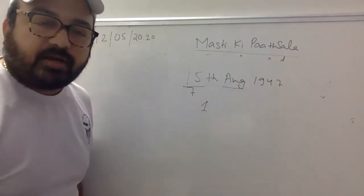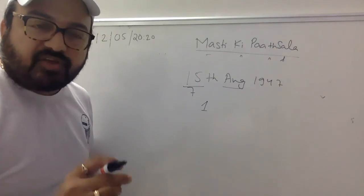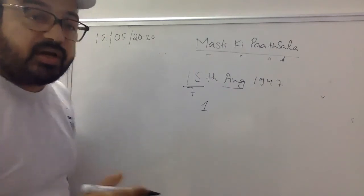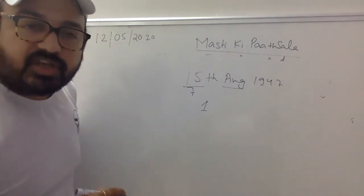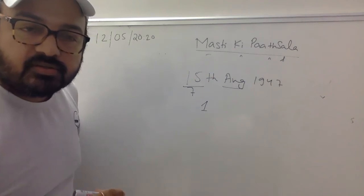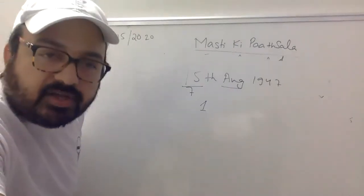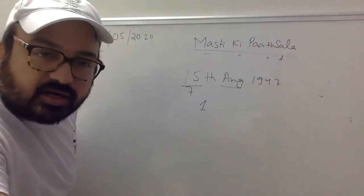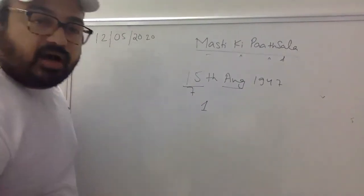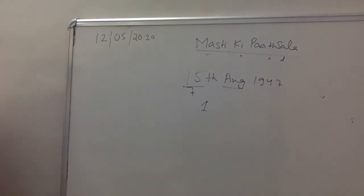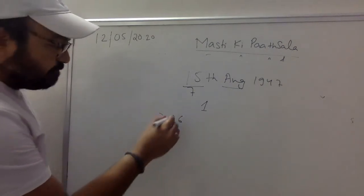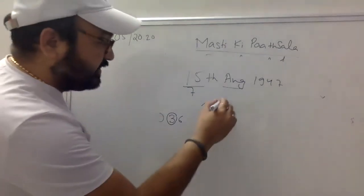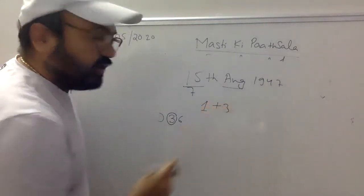अब August: 144 में January, February, March के code हैं 1, 4, 4. April में June का code था, July को 0. August और September ने 36 से 3 और 6 लिए — तो August का code है 3. August भी खत्म हो गया।